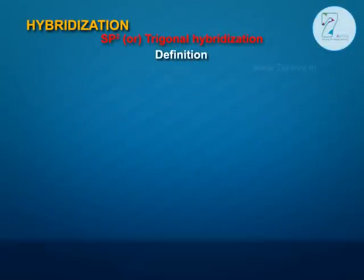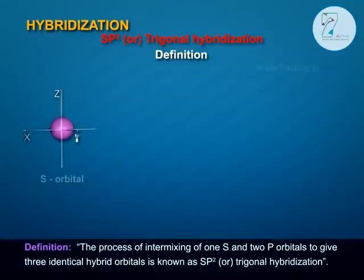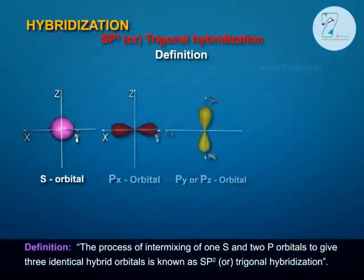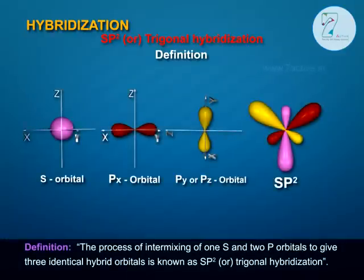The process of intermixing of 1s and 2p orbitals to give three identical hybrid orbitals is known as SP2 or Trigonal Hybridization.